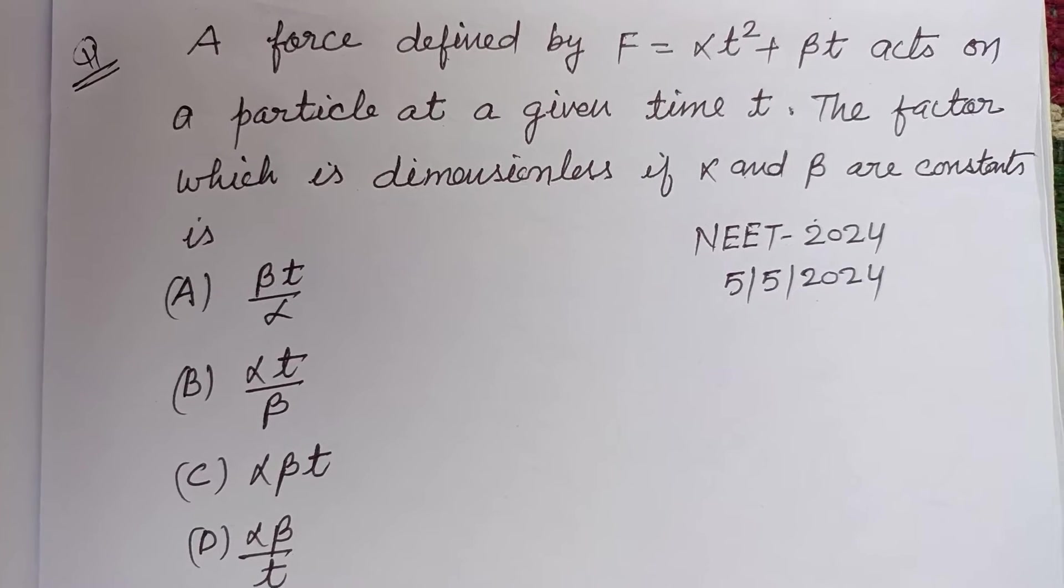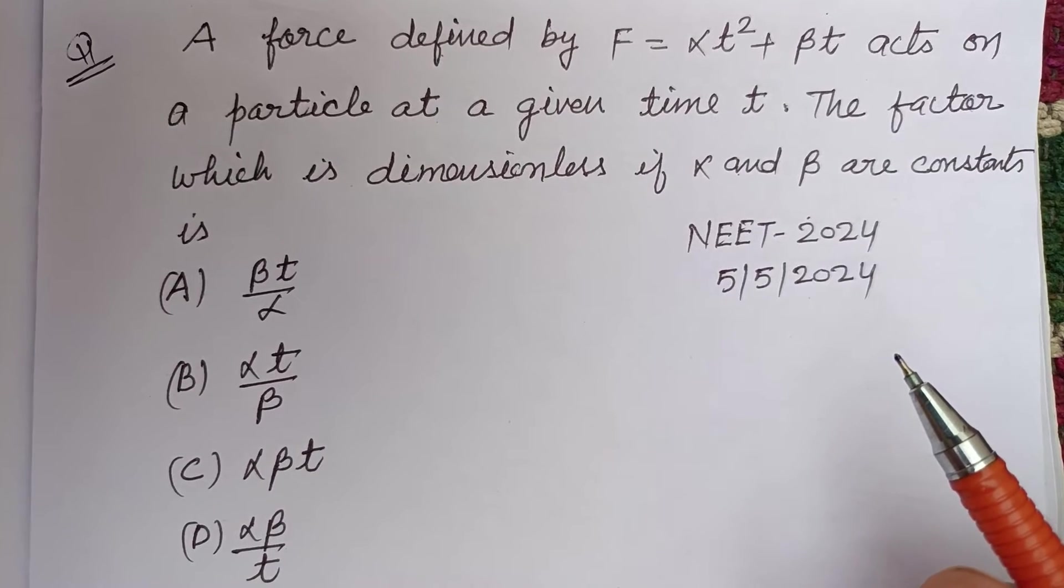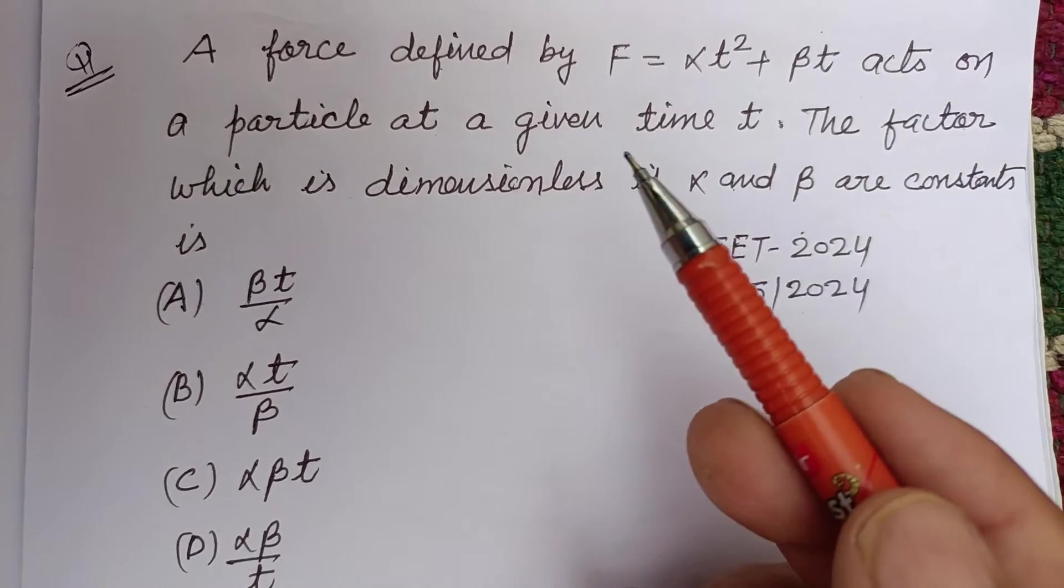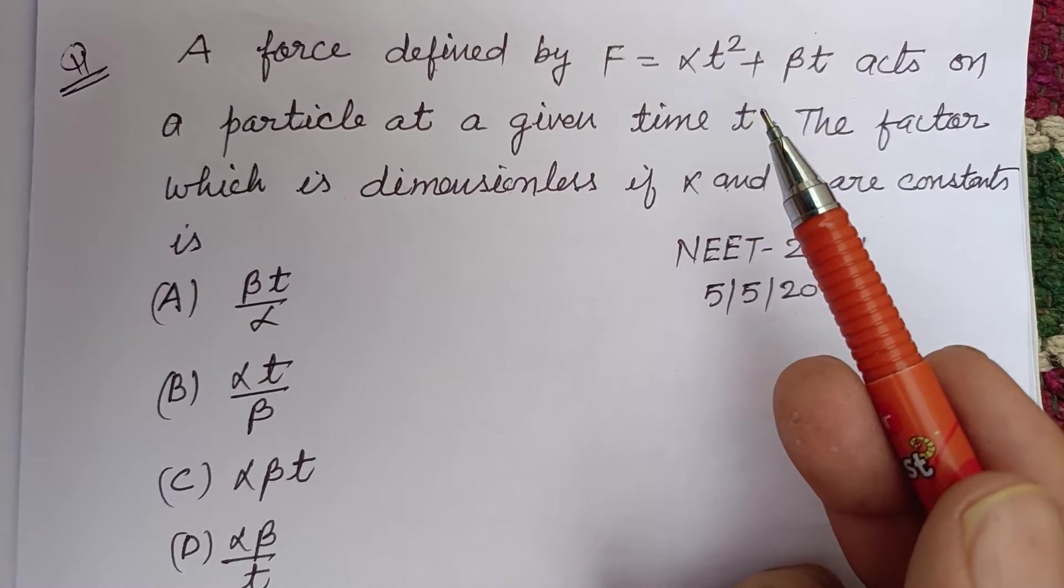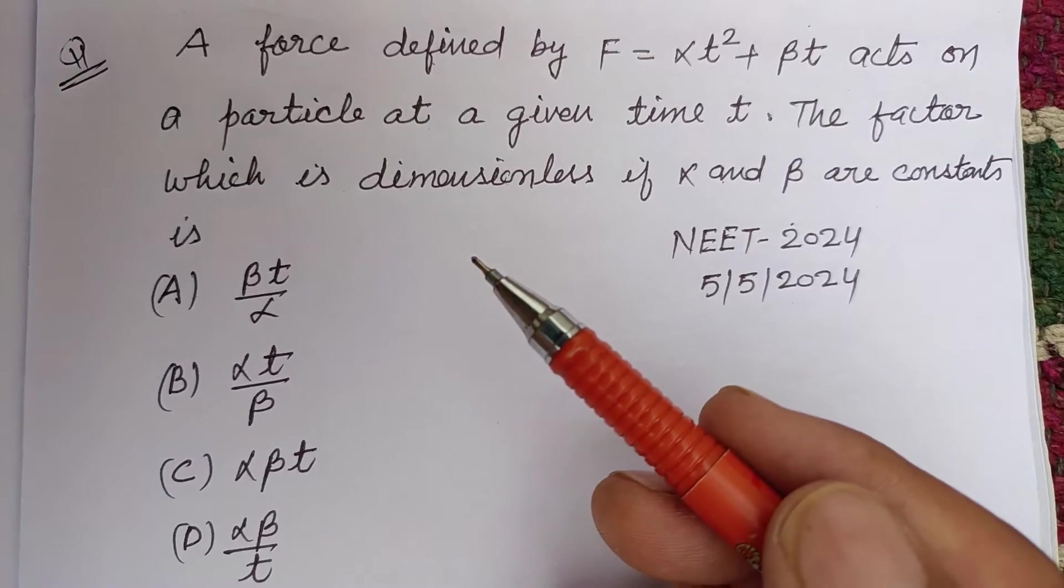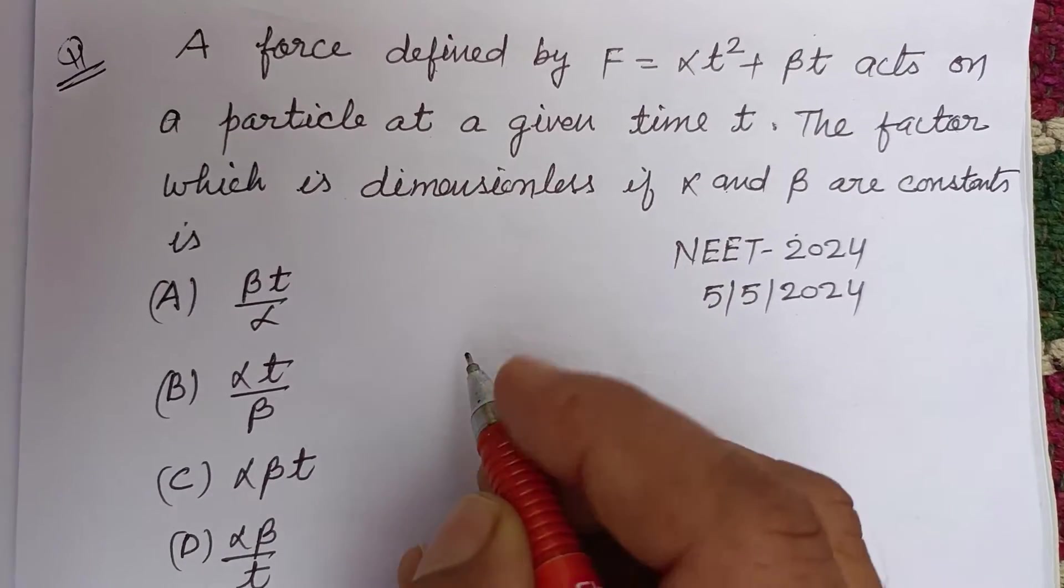Hello viewers, warm welcome to this YouTube channel. This is a question from NEET 2024 held on 5 May 2024. A force defined by F equals alpha t squared plus beta t acts on a particle at a given time t. The factor which is dimensionless if alpha and beta are constants.